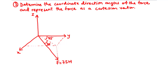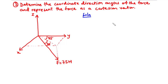Now let's solve example 3: determine the coordinate direction angles of the force and represent the force as a Cartesian vector. We are going to determine angles alpha, beta, and gamma. From the diagram, instead of giving the directional angles directly, we are given two special angles: 30 degrees and 45 degrees.